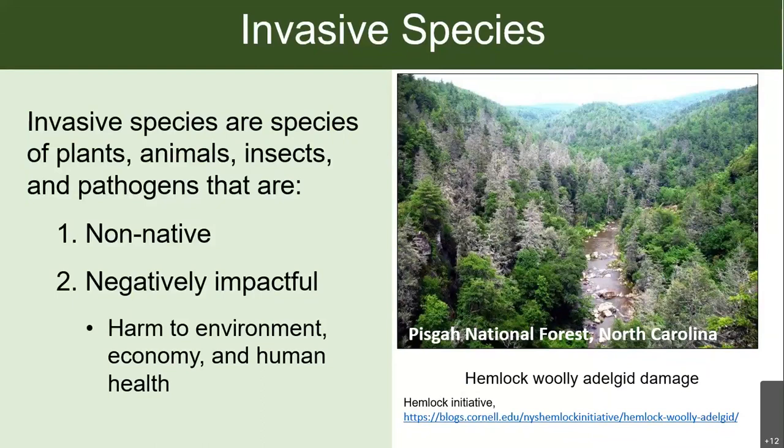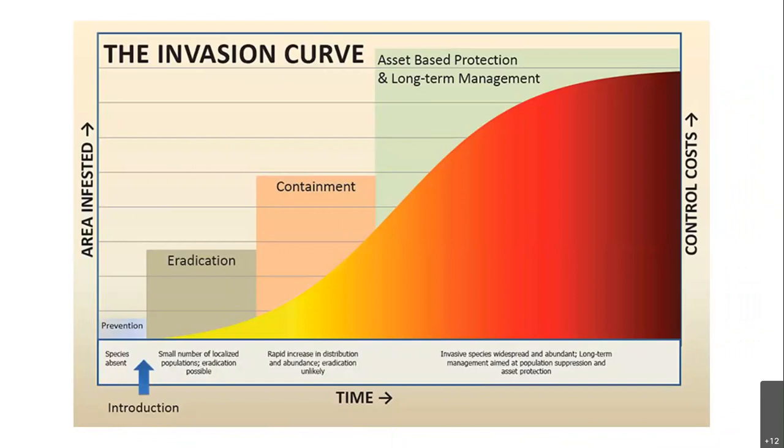What can we do about invasive species? A lot of work has gone into figuring that out. The main idea is that what we do depends on where the species is on the invasion curve. Early in the invasion, the species might not be here yet or only present in small clumps — at that point the focus is on preventing the species from arriving or eradicating it in the small patches where it occurs.